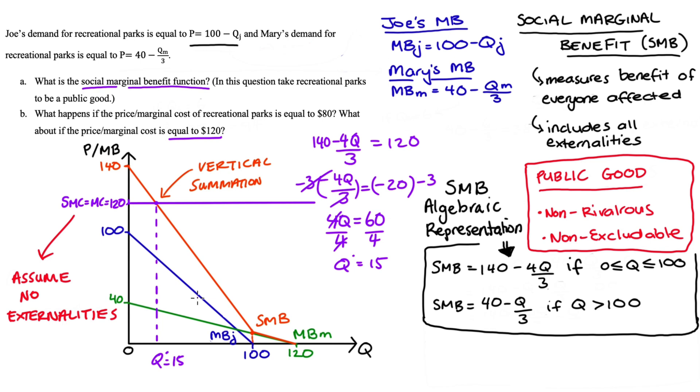And here in our little example we've demonstrated two concerns about leaving the provision of public goods up to the free market. We can run into problems associated with free riding and we can also under produce relative to the optimum.